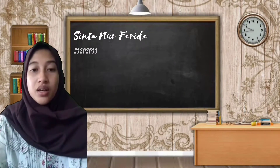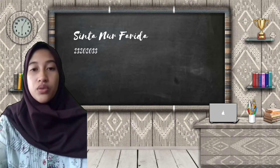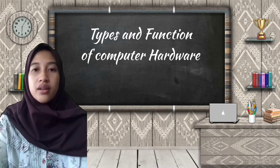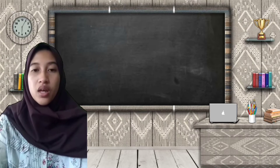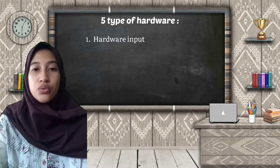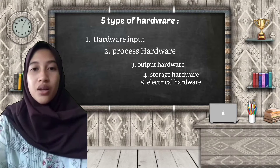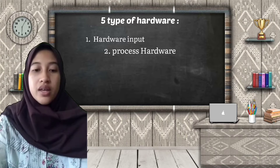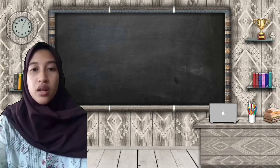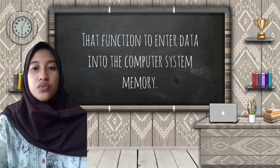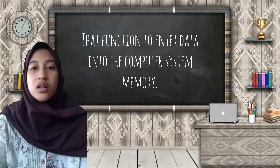Next, the material about the type and function of computer hardware will be presented by my friend Sintana Faridah. Thank you for giving me the opportunity to explain the types of computer hardware and their functions. The computer system consists of five types of hardware: input hardware, output hardware, process hardware, storage hardware, and electrical hardware. These five hardware devices are arranged to form an integrated system able to input, process, and output data.